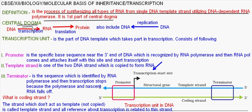From DNA, RNA is synthesized — this process is called transcription. From RNA, protein is synthesized — this process is called translation, which is discussed in another slide. Central dogma also includes DNA to DNA, that is DNA replication.